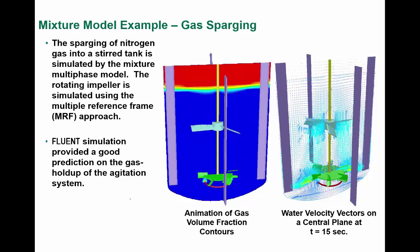Next we can look at the mixture model example: gas sparge. In this particular case, you can see the animation of gas volume fraction contours and water velocity vectors on central areas. Let us understand this scenario and how to look at it.